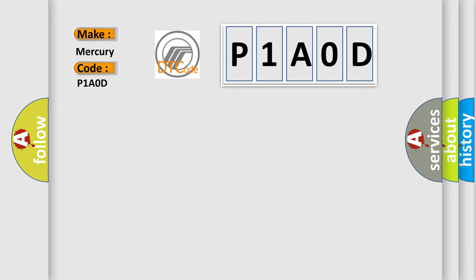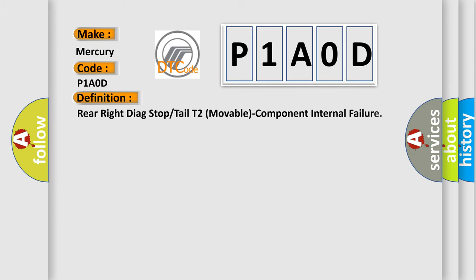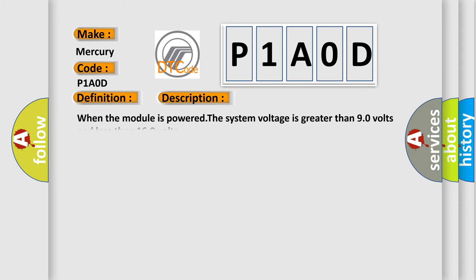For Mercury car manufacturers, the basic definition is rear right diag stop or tail T2 movable component internal failure. And now this is a short description of this DTC code. When the module is powered, the system voltage is greater than 9.0 volts and less than 16.0 volts.